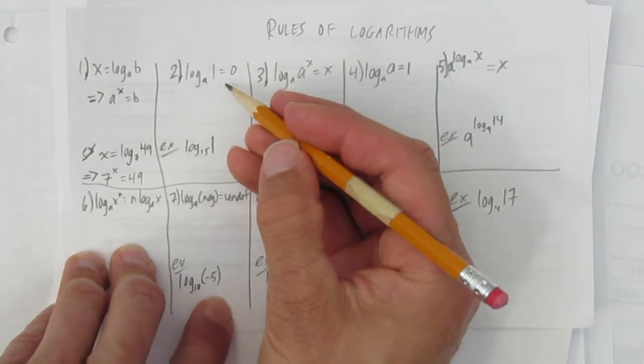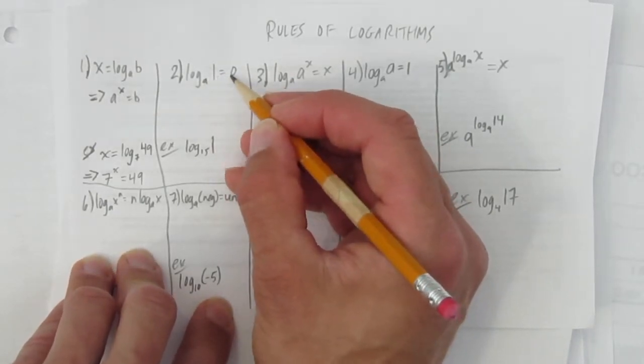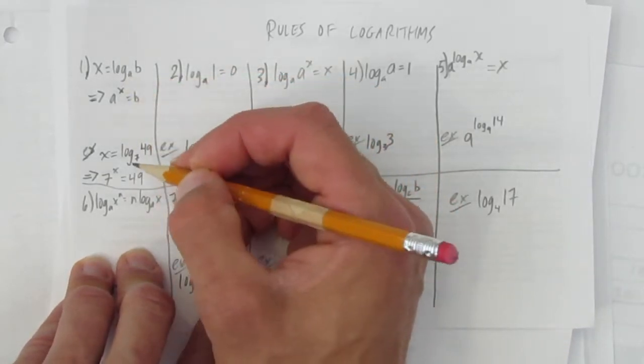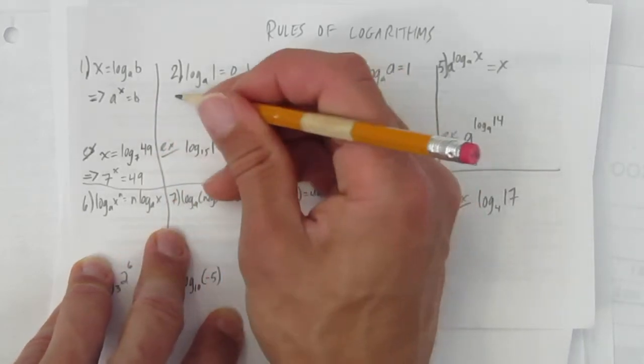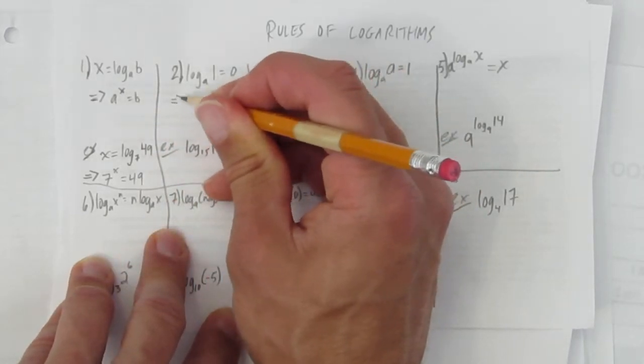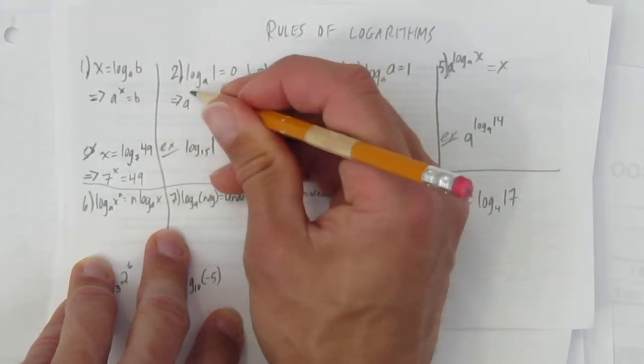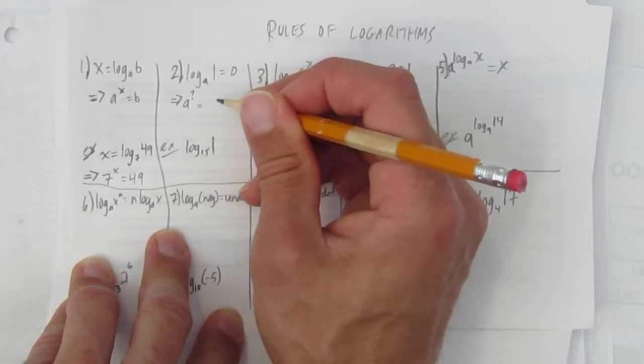What does rule 2 tell you? It says log of any base a, if you're logging 1, the answer is always 0. And that should make sense to you because if you believe rule 1, which you should, it's true, rule 2 is just based on rule 1. Look, you don't have to do this, but just look at what's happening. This would be the same as implies a to the power of what number equals 1.